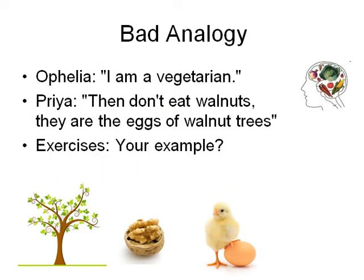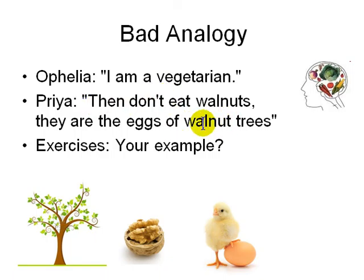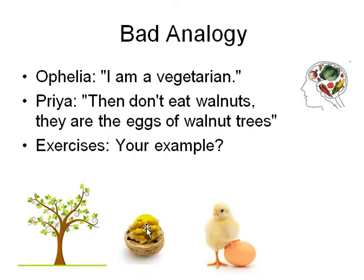Next is bad analogy. Ophelia says she is a vegetarian. Priya says walnuts are like eggs of a walnut tree. The analogy compares walnut seeds to eggs, and since vegetarians don't eat eggs, the implication is that you can't eat walnuts either. This is a bad analogy — comparing seeds to eggs to reach an unwarranted conclusion.